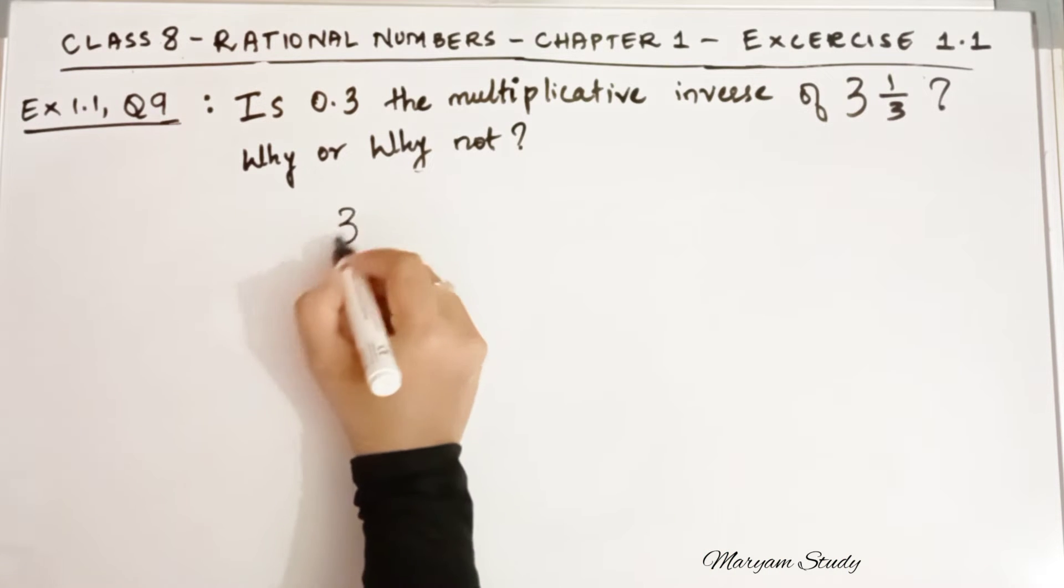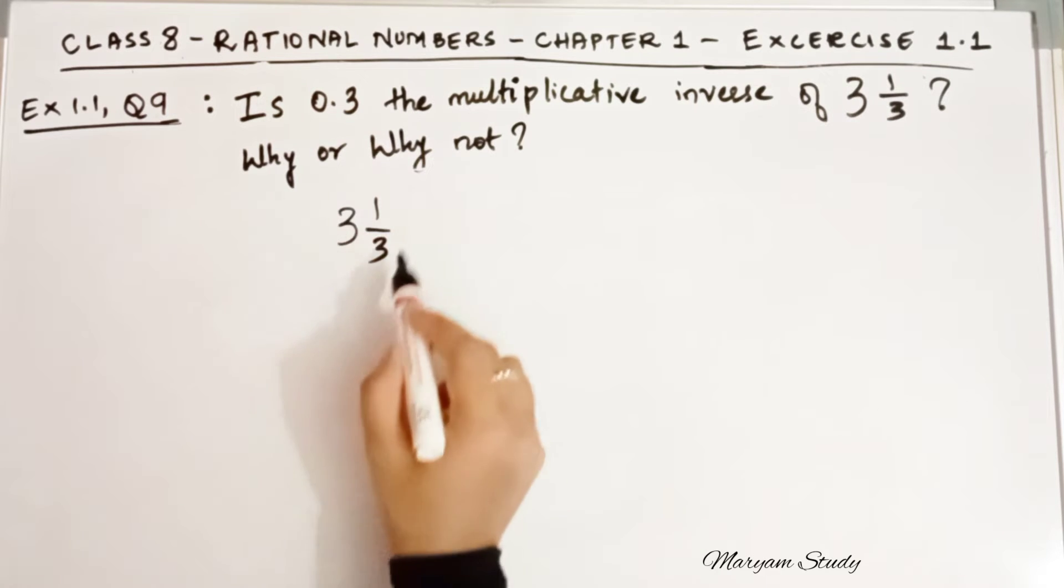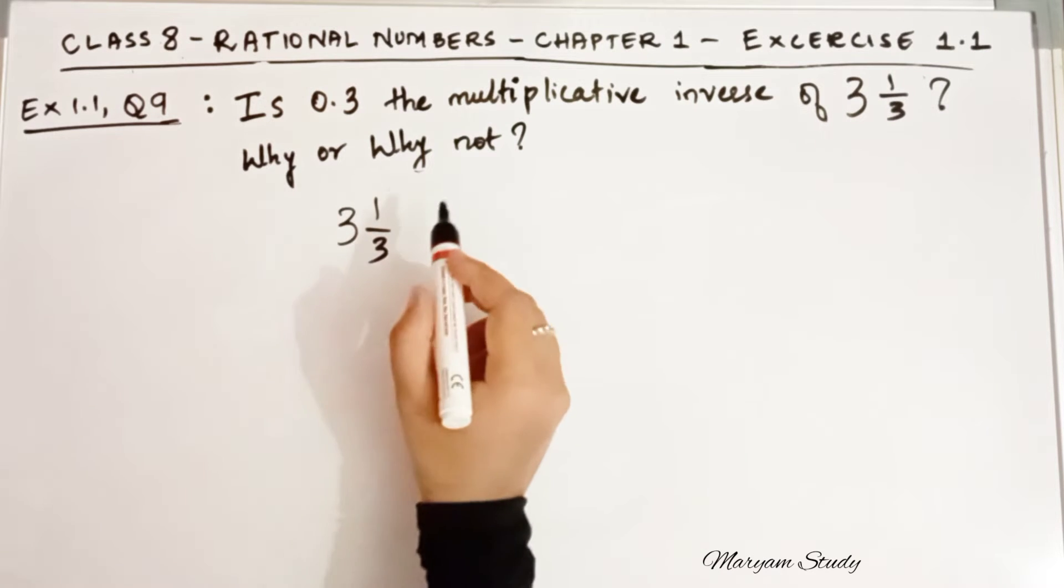So let us find out. 3 1 by 3. So first what we are going to do? We are going to convert this mixed fraction into the improper fraction.